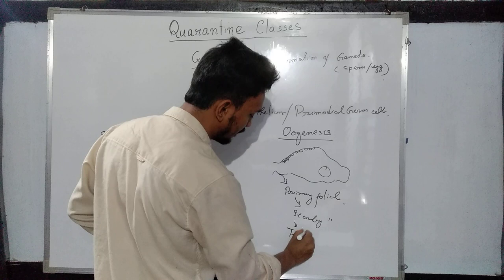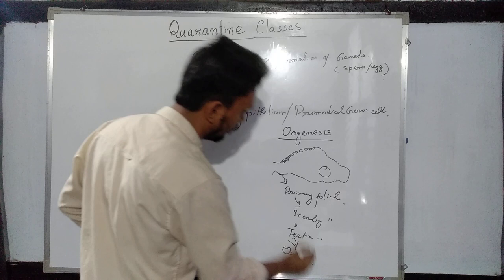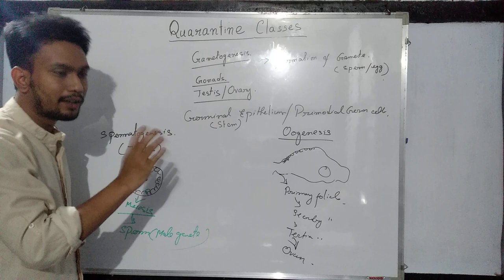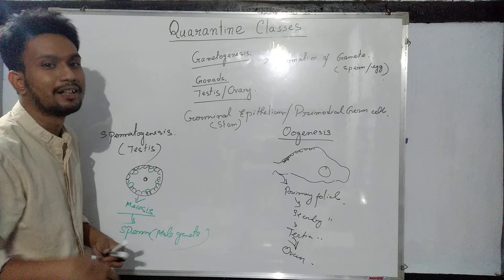Then there will be a tertiary follicle, and finally it will develop into a functional ovum. This is the basic idea of gametogenesis, in which the germinal epithelium of either testis or ovary undergoes meiosis and produces the male and female gamete respectively.